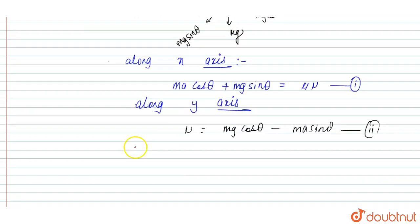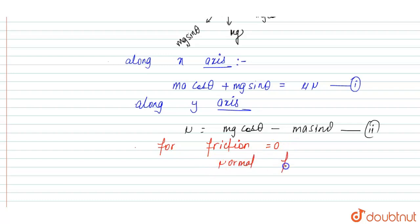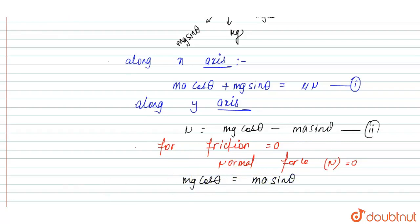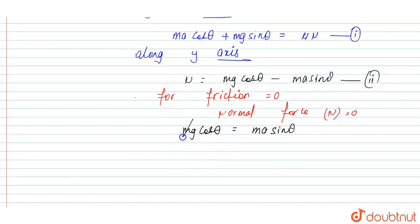Along the y-axis, N equals Mg·cos(theta) minus M·A·sin(theta). This is equation number 2. The given condition is that friction is 0. If frictional force is 0, then the normal force N is also 0. Substituting N equal to 0 gives Mg·cos(theta) equals M·A·sin(theta), so M cancels and A equals g divided by tan(theta).